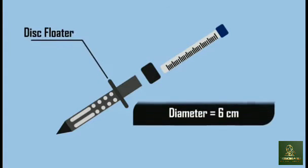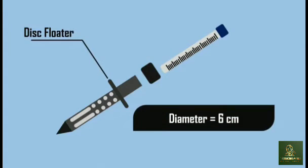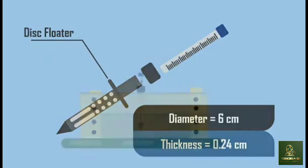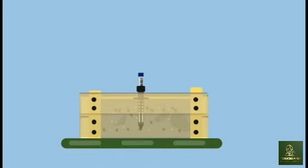A disc floater, 6 cm in diameter and 0.24 cm in thickness, divides the tube into two parts. This disc prevents the tester from sinking into the concrete beyond the pre-selected level.